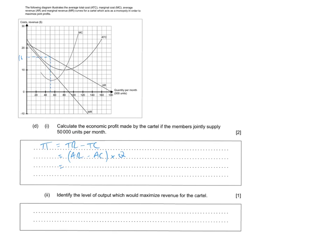So we did that by going to the 50,000 units per month, going up to the average revenue curve, the demand curve, and reading off 16. And on the average cost curve at 50,000 units a month, then we find that the average cost is 12. So we'll pop those into the formula, 16 minus 12 times by 50,000 gives us an economic profit for the cartel of $200,000.